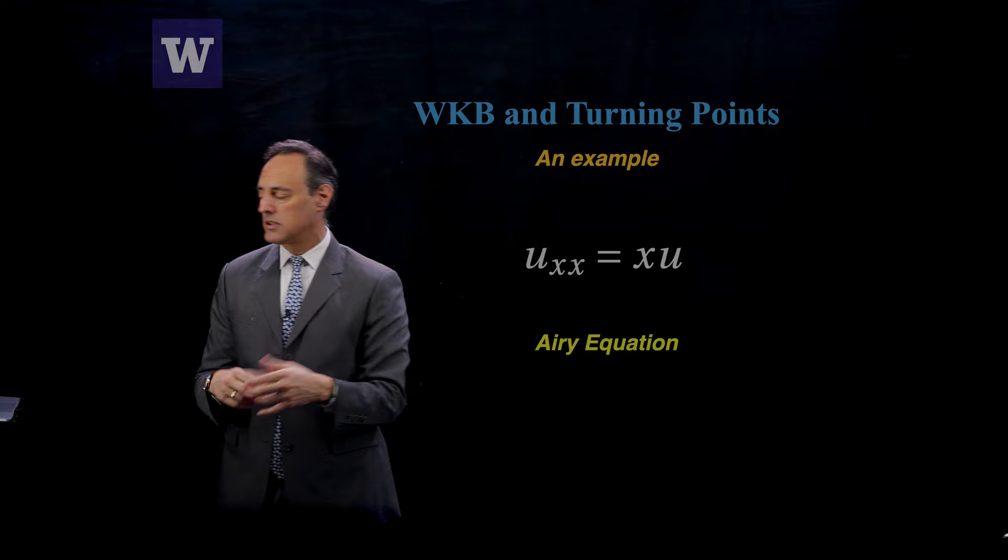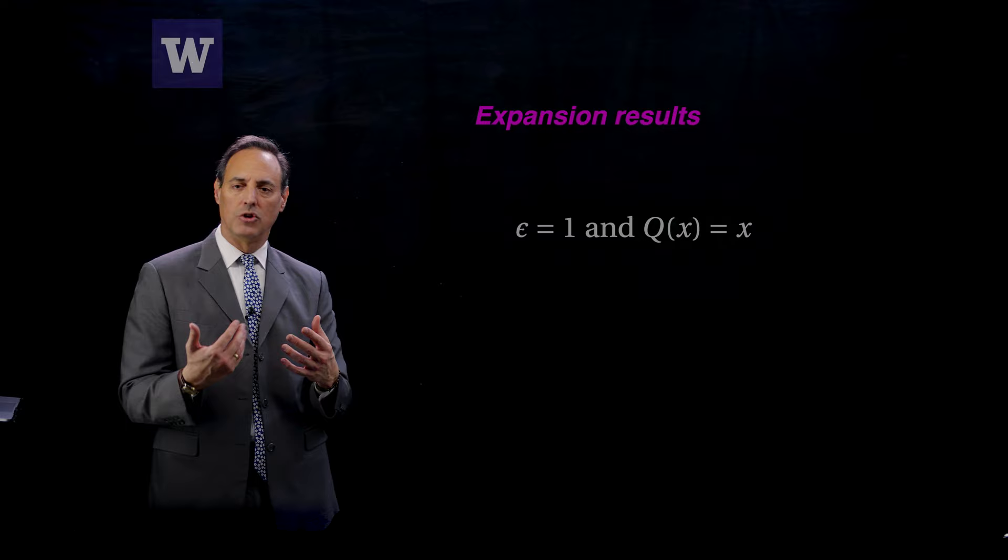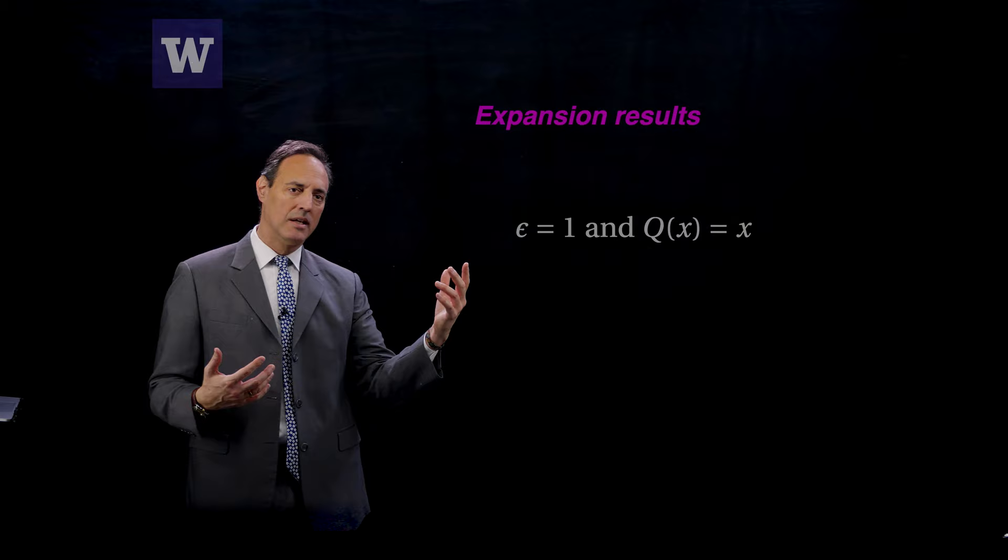There's no small parameter in it at this point, but let's go ahead and start playing around and just doing a formal expansion. In particular, epsilon in this case is 1. Remember what we solved in the previous lecture was epsilon squared uxx equals q of xu. So it's of that form with q of x equals x and epsilon equals 1.